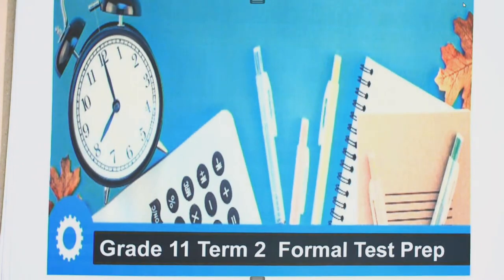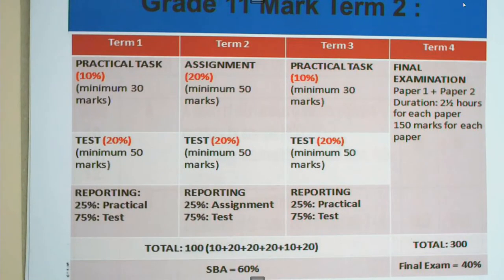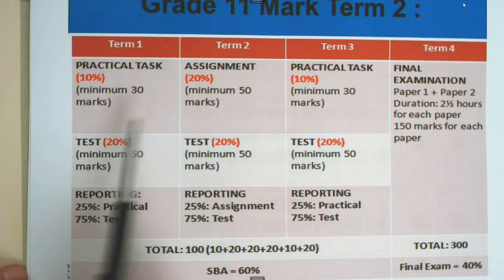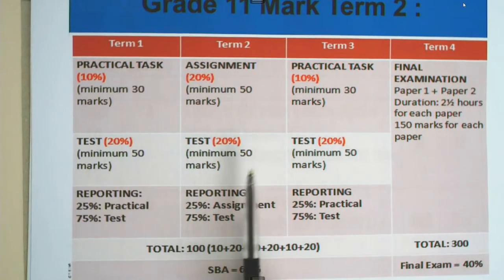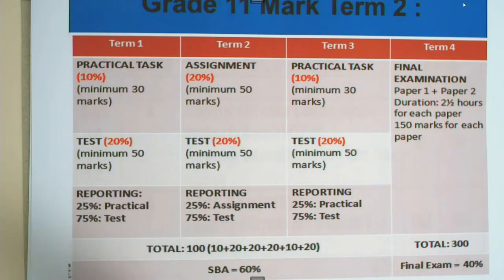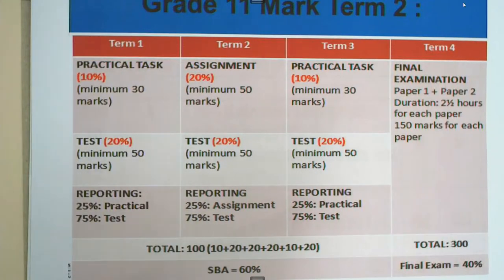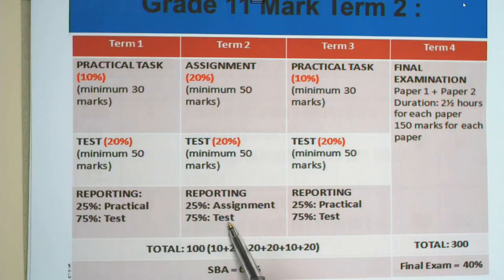We are starting with the Term 2 formal test preparation. Now how will it work for Term 2? You would have had an assignment already, out of 50 marks, and then we are going to write this formal test that also counts 50 marks. The items marked in red — those 20% — count towards your final mark but you can ignore them for this term. For this term, your assignment counts 25% and the test counts 75%, giving you 100% for Term 2. As you can see, the test is quite important.